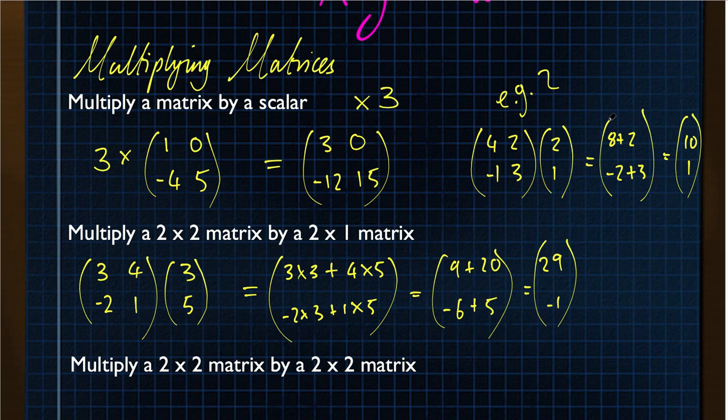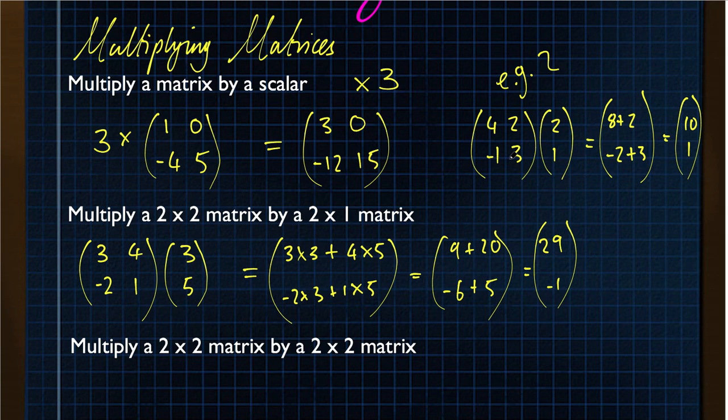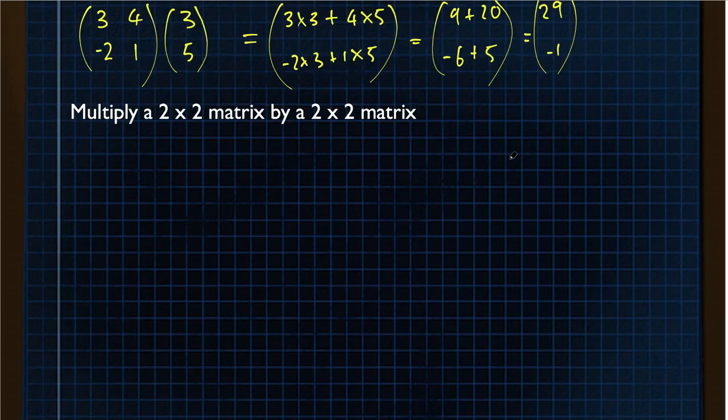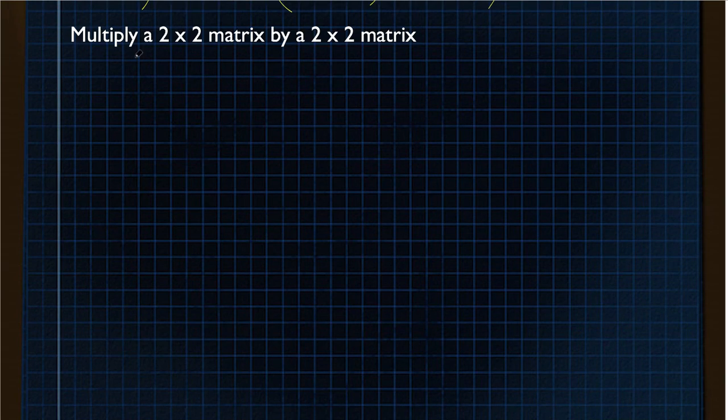That's multiplying a 2 by 2 matrix by a 2 by 1 matrix. This is going to be useful in transformations later on. 2 by 2 matrix by a 2 by 2 matrix. Same sort of process, but it goes on for longer.